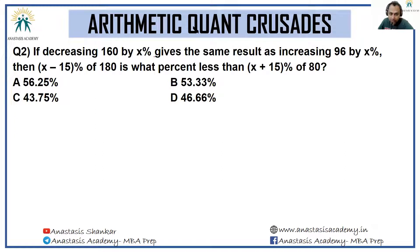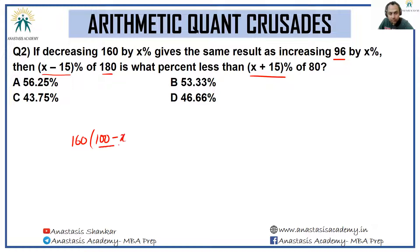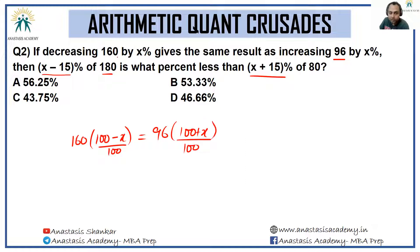Next question: decreasing 160 by x percent gives the same result as increasing 96 by x percent. Then find x minus 15 percent of 180 as a percentage less than x plus 15 percent of 80. Focus on the value of x. Setting up the equation: 160 × (100 − x)/100 = 96 × (100 + x)/100. After canceling, we get (100 − x)/(100 + x) = 3/5. Note this forms a GP.